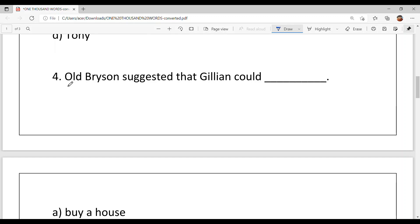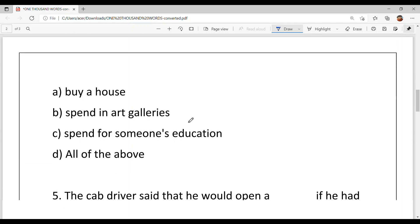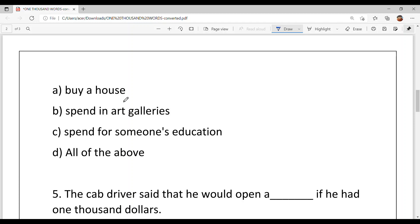Question number 4, Old Bryson suggested that Gillian could dash. A, buy a house, B, spend in art galleries, C, spend on for someone's education, sponsor someone's education. Option D,